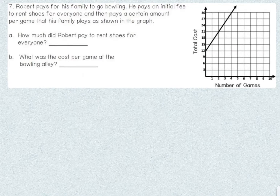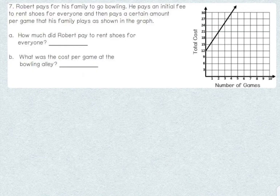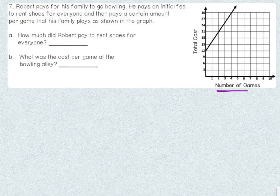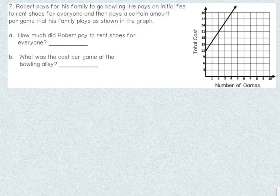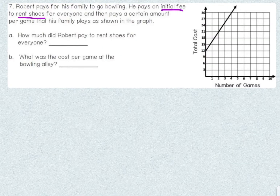Our first problem has a graph. Robert pays for his family to go bowling. He pays an initial fee to rent shoes for everyone and then pays a certain amount per game that his family plays, as shown in the graph. Our first question is: how much did Robert pay to rent shoes for everyone? When we look at our graph, we see number of games and total cost, but nothing about shoes being rented — that information is in the problem. It says he pays an initial fee to rent shoes for everyone. What do you think this represents about the graph?